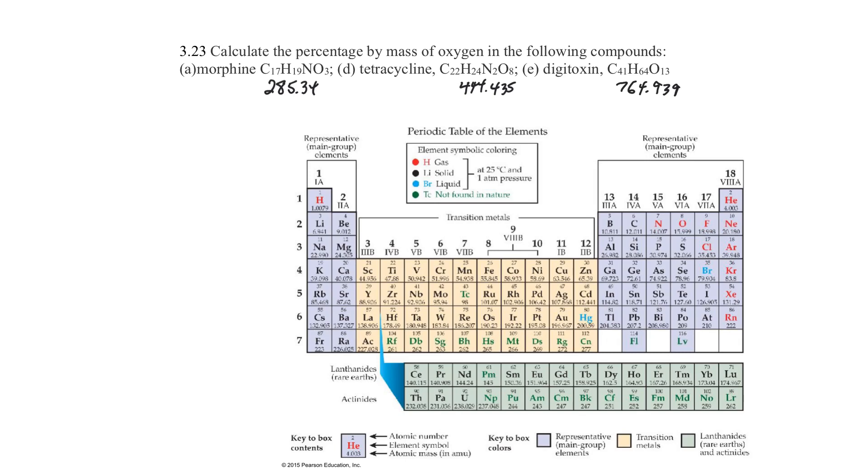Hello, this is Chemistry Central Science. We are in Chapter 3, end of the chapter questions, and this is question number 23. Calculate the percentage by mass of oxygen in the following compounds: morphine, tetracycline, and digitoxin.